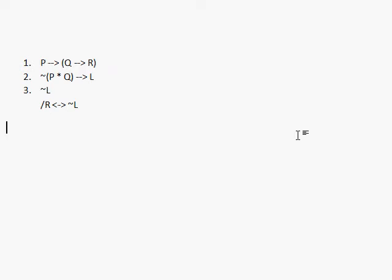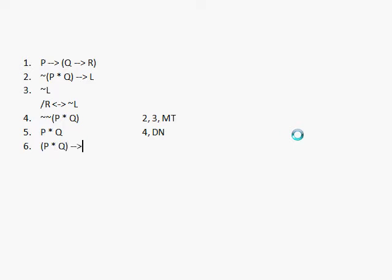So I'm going to get not not P and Q through 2, 3 modus tollens. And I'm going to get P and Q through 4 double negation. And I'm going to get, using the new exportation rule we learned, P and Q then R through 1 exportation. And now I'm going to get R through 5, 6 modus tollens. And I'm going to get not L and R through 3, 7 conjunction.